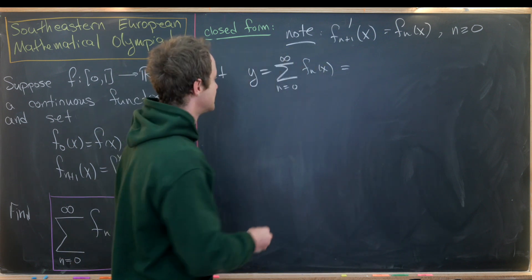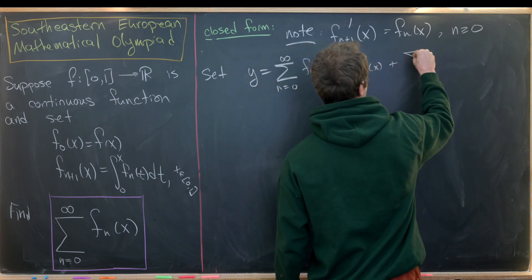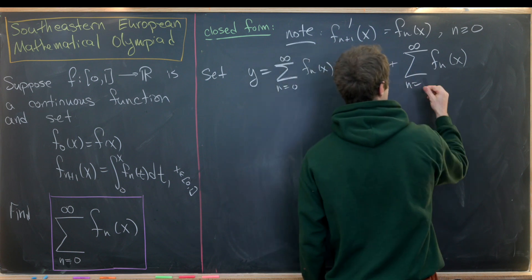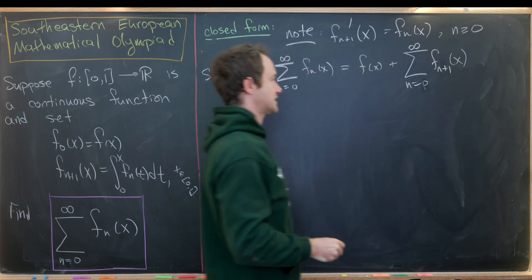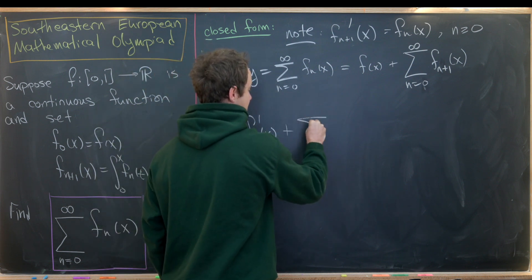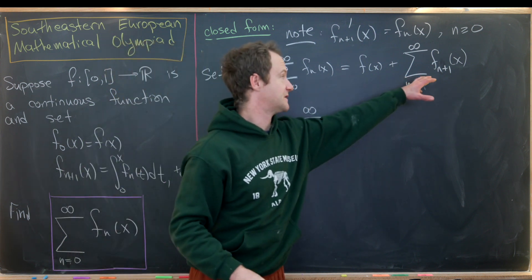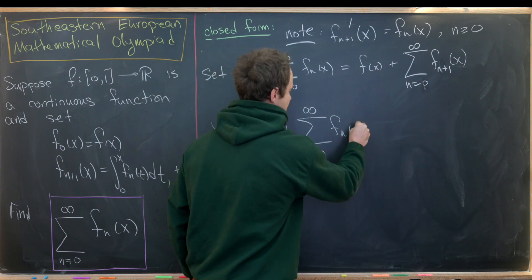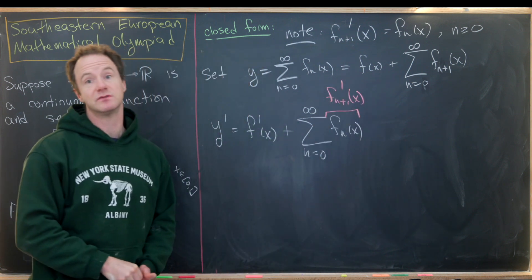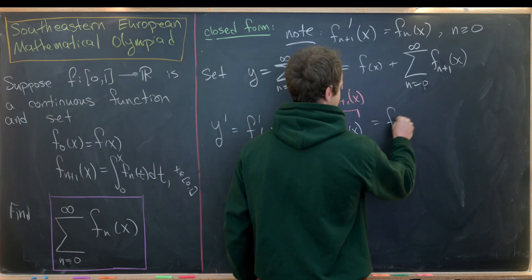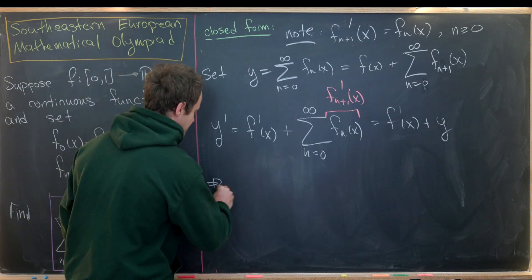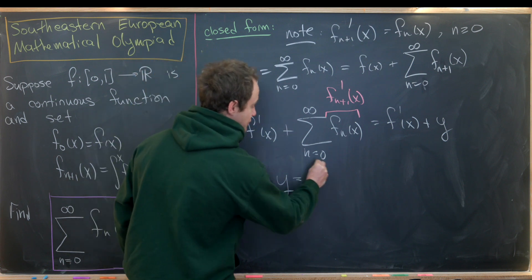We extract f(x) and rewrite y = f(x) + the sum from n=1 to infinity of f_n(x). Re-indexing so the sum starts at n=0 gives f_n replaced by f_{n+1}. Taking the derivative: y' = f'(x) + the sum from n=0 to infinity of f_{n+1}'(x) = f'(x) + the sum of f_n(x) = f'(x) + y. So we have the first-order linear ODE: y' - y = f'(x).